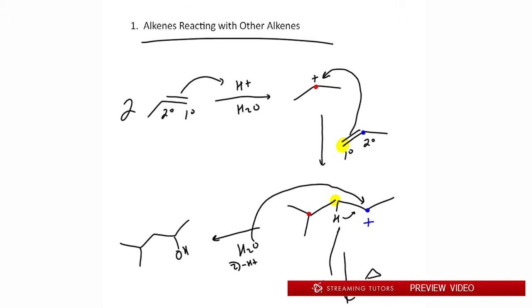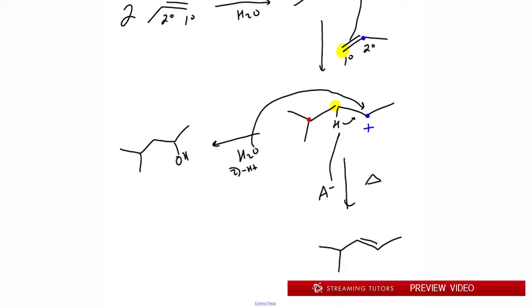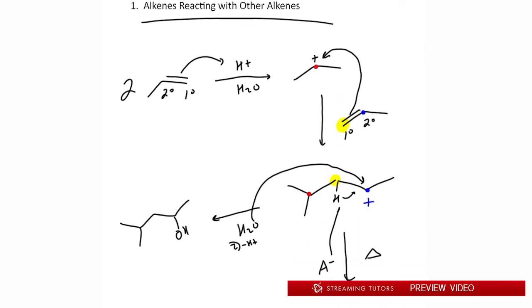Usually a problem like this, they give you the start and they give you the end. They say, show the mechanism. So many things can happen, but this is an example of one. Now this is where two alkenes are reacting with each other.